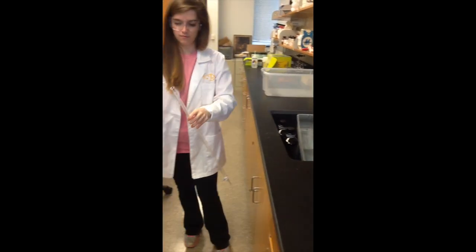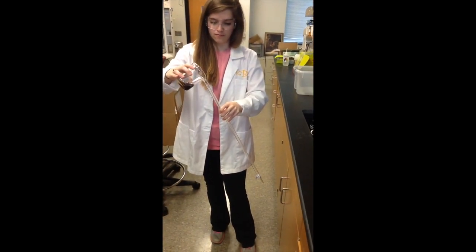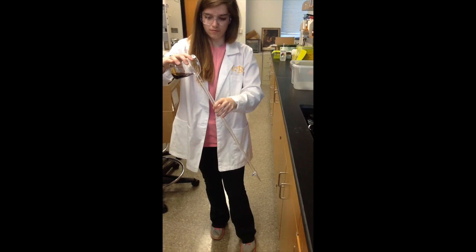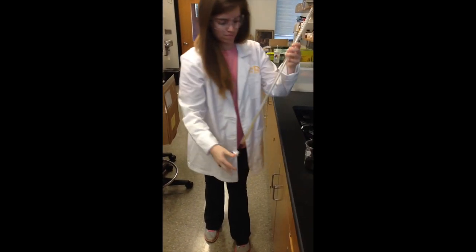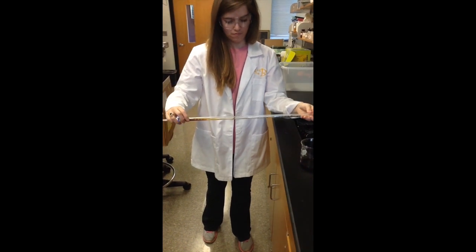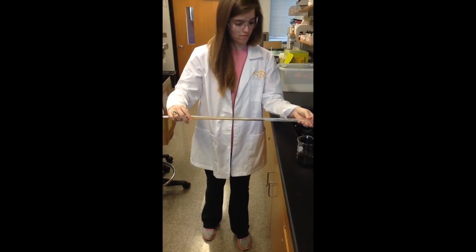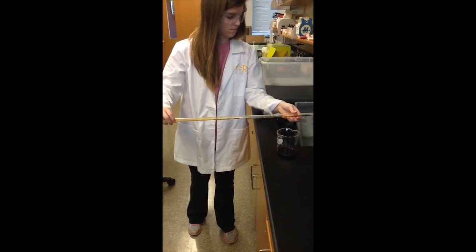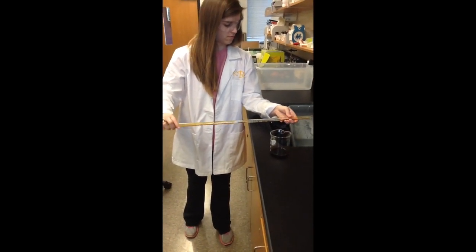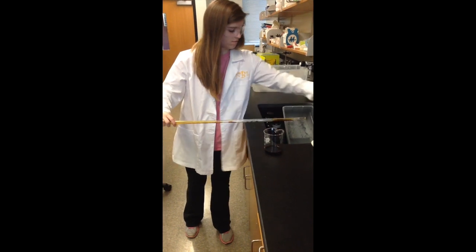First, prepare your burette by pouring about 5 mL of iodine into it. Make sure the stopcock is closed before you do this. Over the sink, tilt your burette so that the iodine solution will coat most of the inside. Discard the iodine in the sink and rinse with plenty of water. Repeat this process one more time.